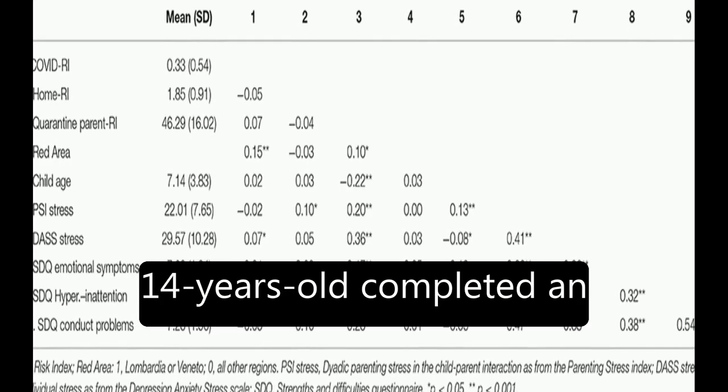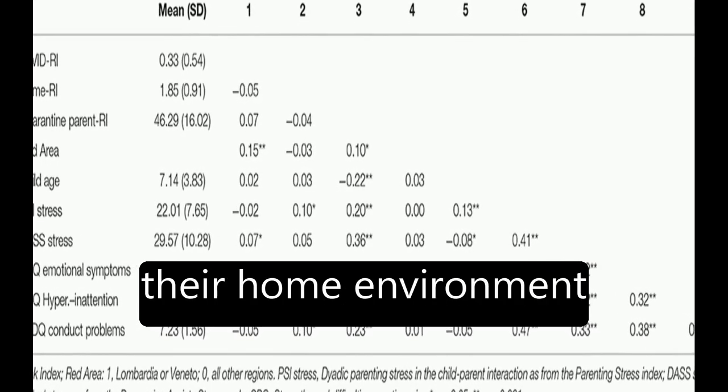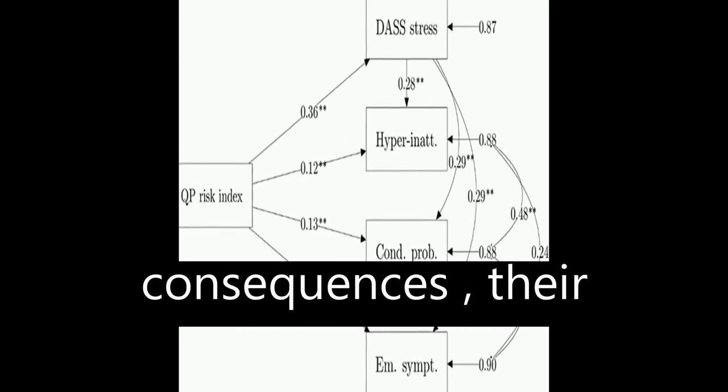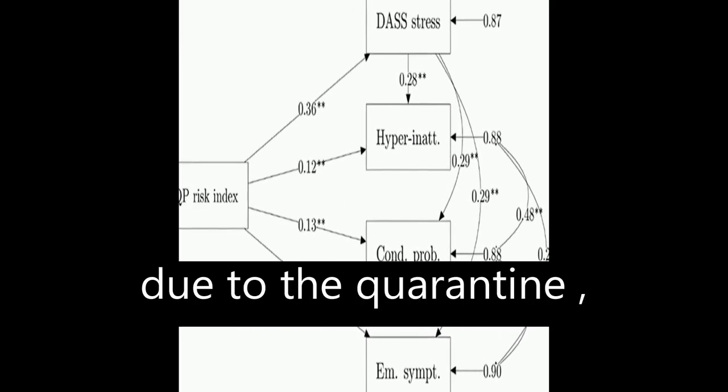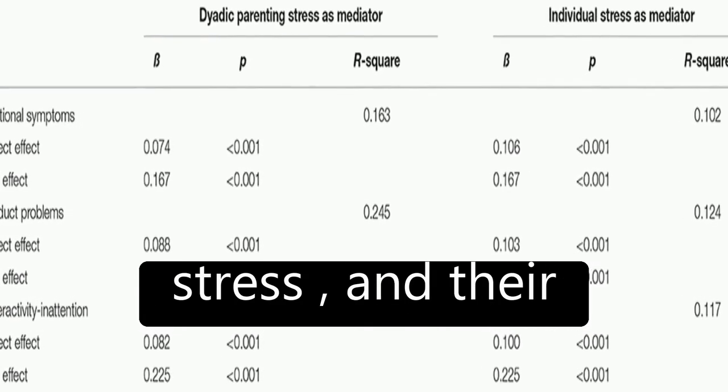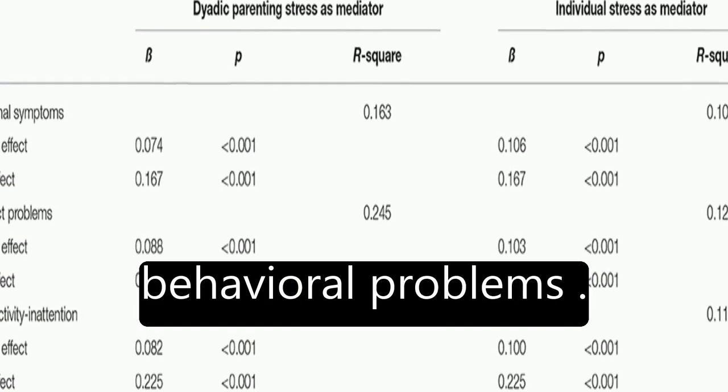Parents of children aged between 2 and 14 years old completed an online survey reporting their home environment conditions, any relation they had to the pandemic consequences, their difficulties experienced due to the quarantine, their perception of individual and parent-child dyadic stress, and their children's emotional and behavioral problems.